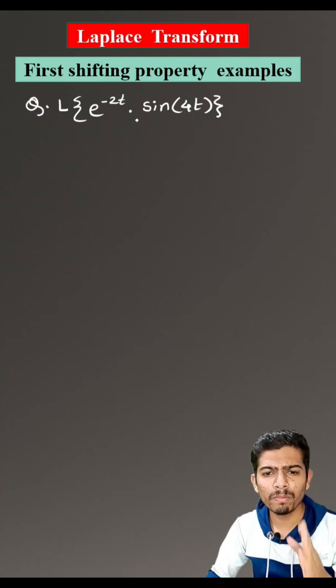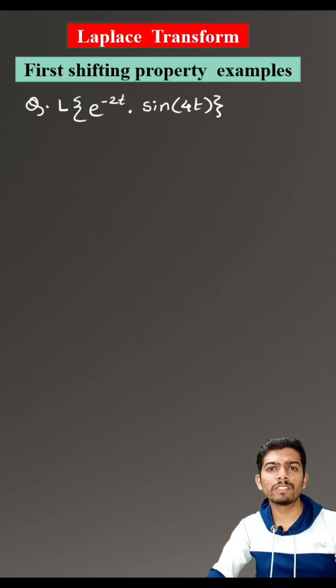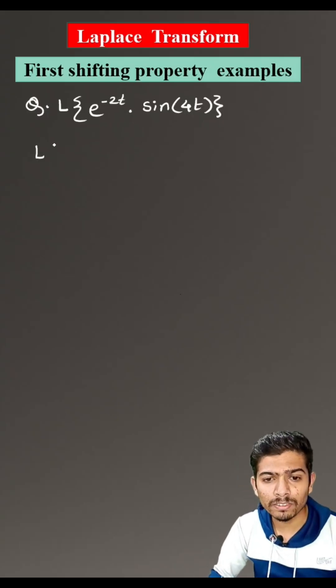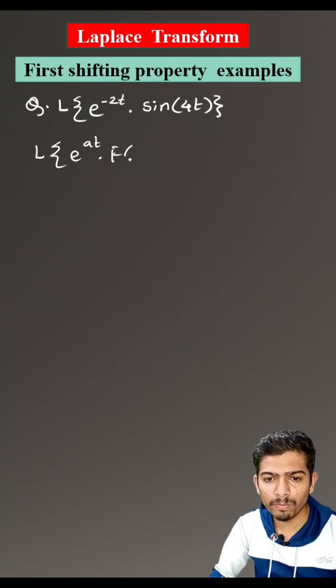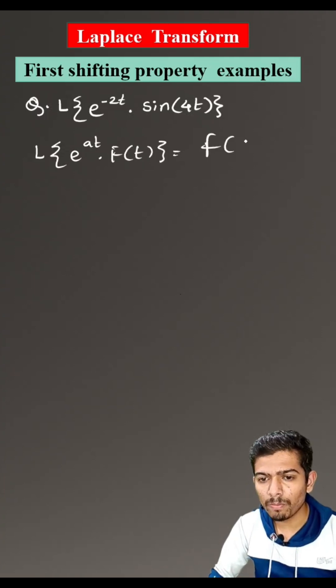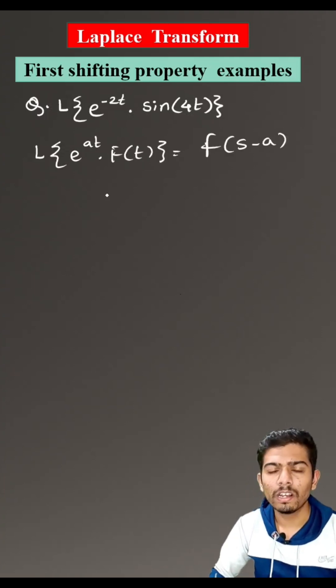Hello everyone, how to solve this type of example? First of all, we will recall the first shifting property: the Laplace transform of e raised to at into F(t) is equals to f(s minus a).